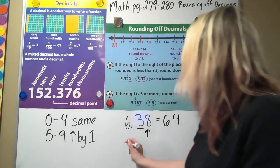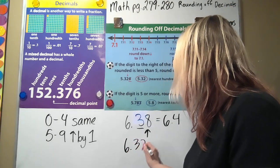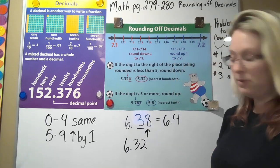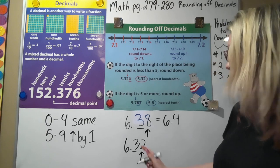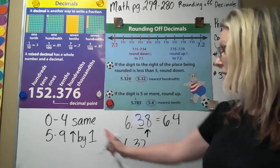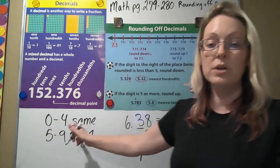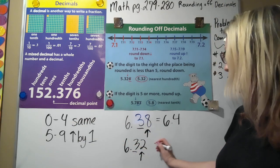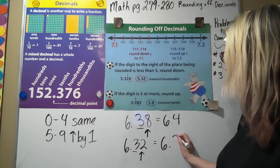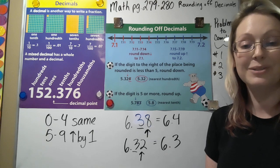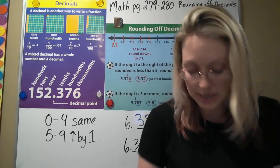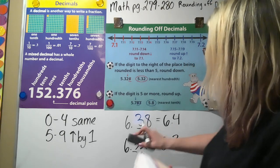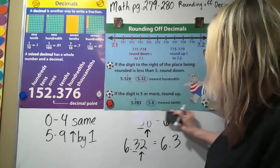Let me give you another one: 6.32, and I say round to the nearest tenth. That's the number, that's my determining digit. So two is between zero and four, stays the same. That means my three stays the same. I round it to 6.3. How are we feeling about that? Now let's take a look at something a little unique. What if I don't have this whole number in front here?